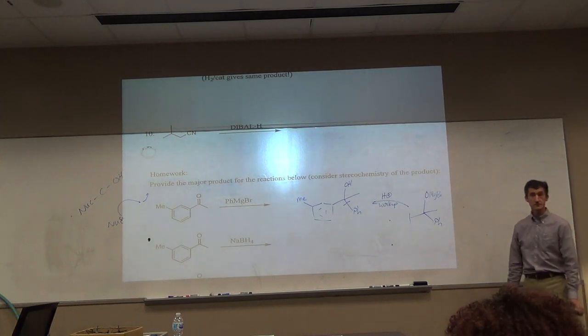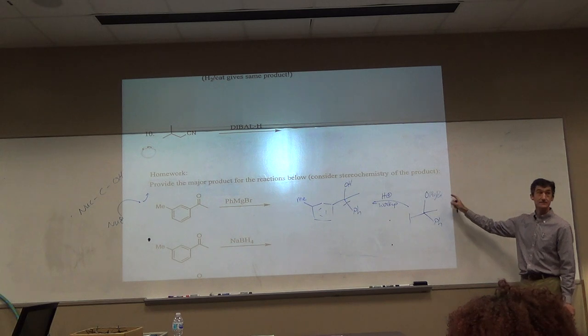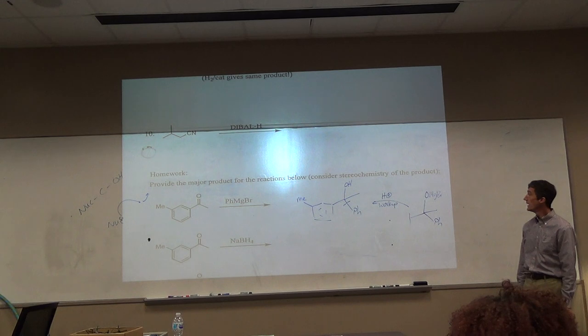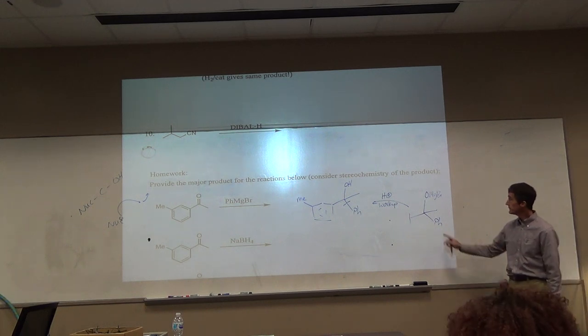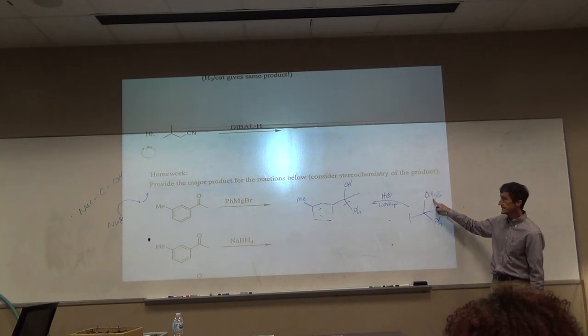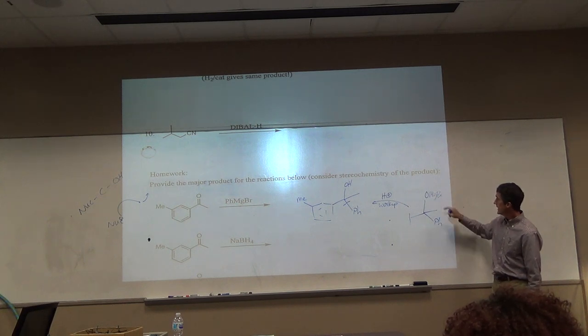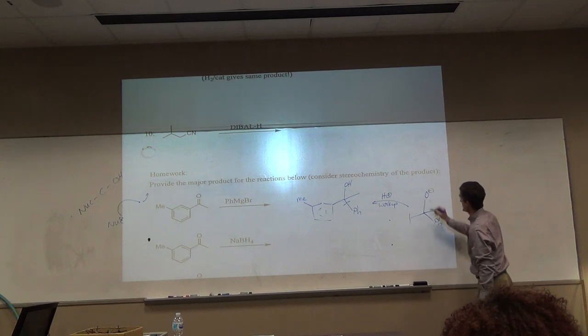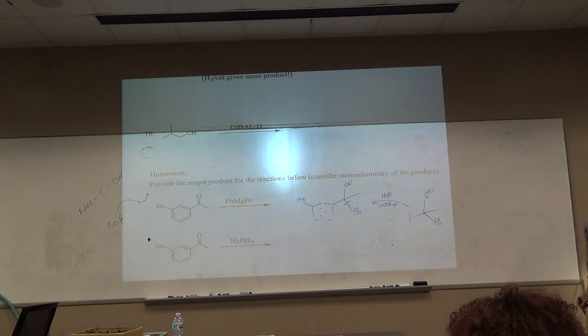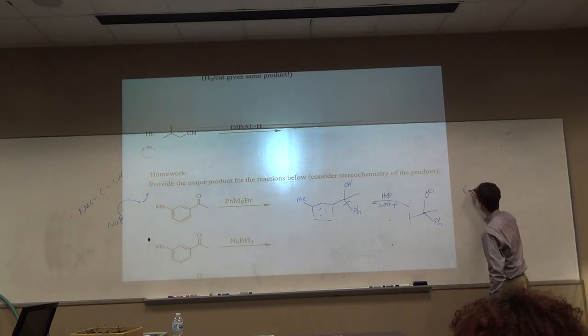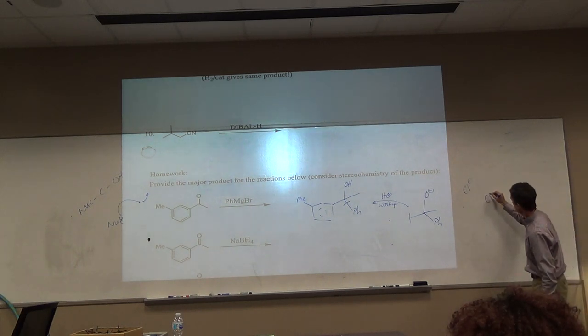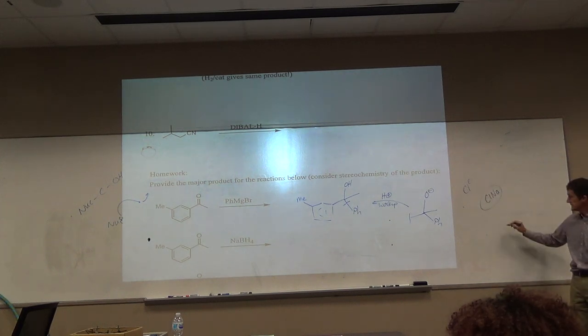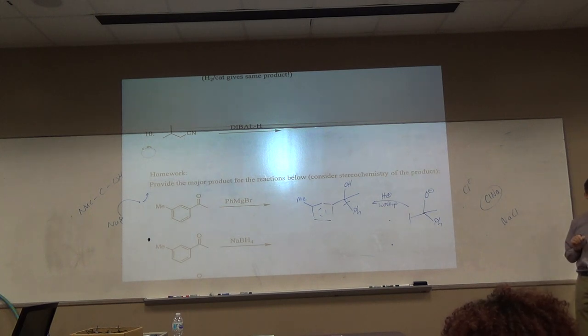I've seen things shown like this, and it gives students problems sometimes. It's O minus, and it's Mg two plus, and it's Br minus. When you work this up, you're going to protonate this. Magnesium two plus, that's it. That's how it's going to exist for the rest of its life. Every anion's got a cation, and it could just be shown there.